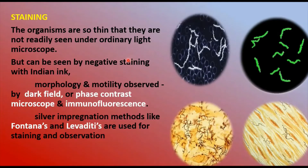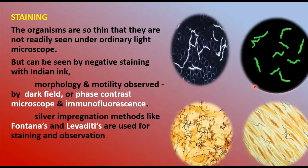Regarding staining of Treponema pallidum: it cannot be observed under the light microscope in wet preparations due to its weak refractility and slender thickness, but it can be seen by negative staining with Indian ink. Its morphology and motility can easily be observed under the dark-field microscope or phase contrast microscope. It does not stain with ordinary bacterial stains like Gram stain, but stains light rose-red or pale pink with prolonged Giemsa staining.